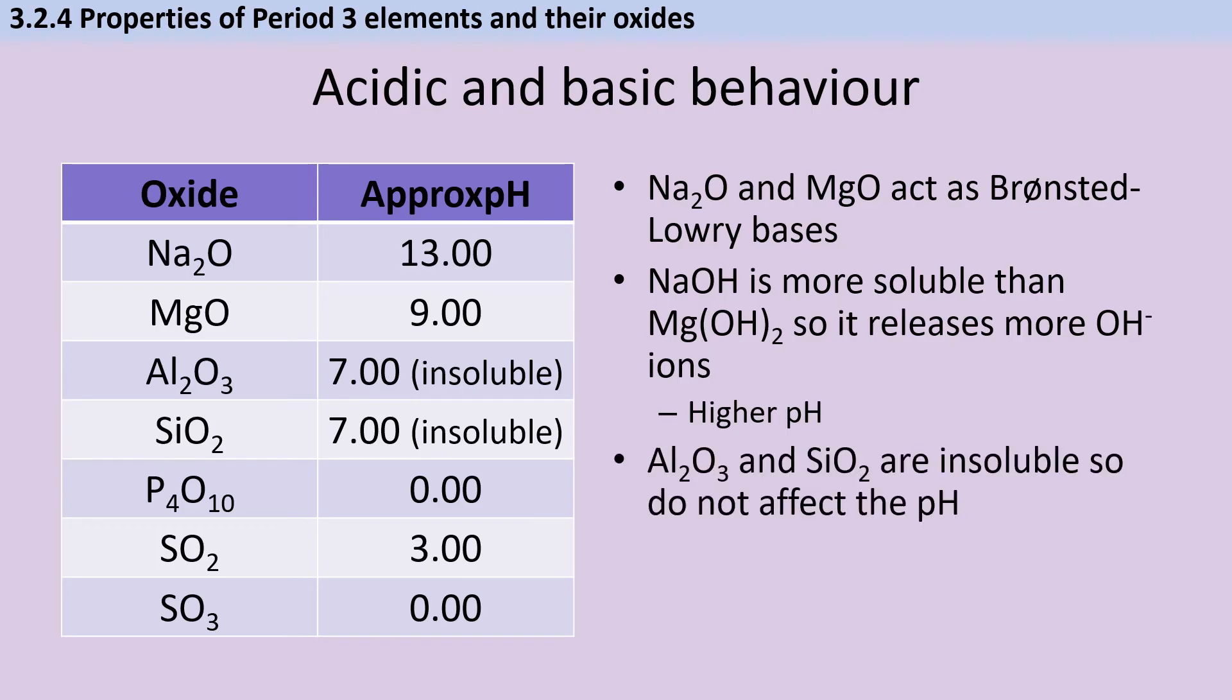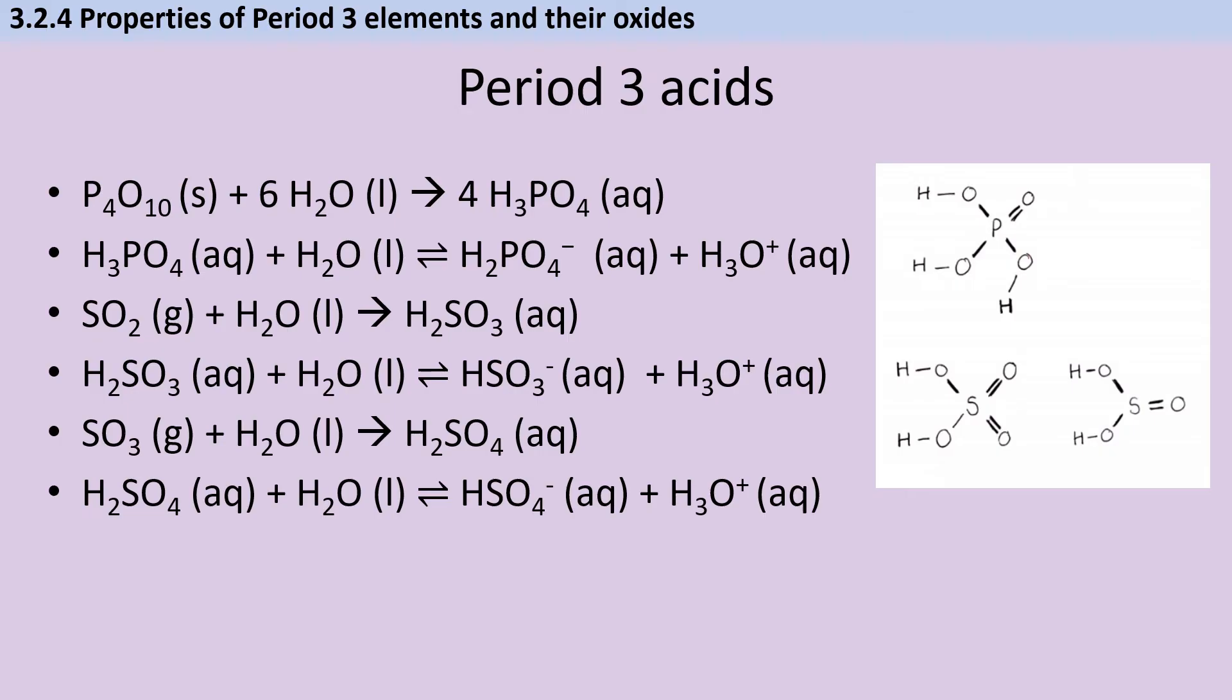Aluminium oxide and silicon dioxide are basically insoluble, so they don't affect the pH. And then phosphorus oxide and sulfur dioxide and sulfur trioxide can all dissolve to produce different acids. Phosphoric acid forms when one mole of phosphorus pentoxide reacts with six moles of water. This phosphoric acid can then dissociate in water to form dihydrogen phosphate ions. Sulfur dioxide can react with water to make a sulfurous acid with the formula H2SO3, whereas sulfur trioxide can react with water to make the more familiar sulfuric acid.